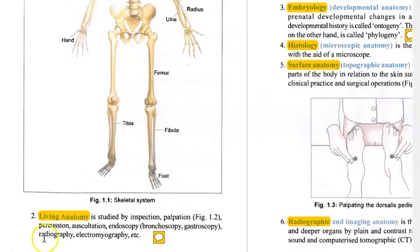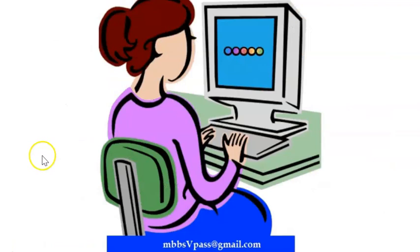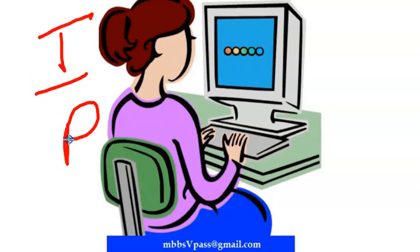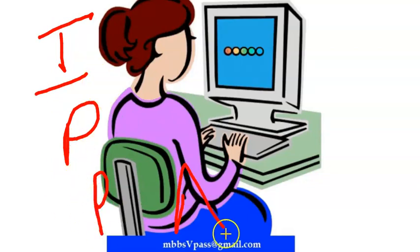Living anatomy — how will you check the anatomy of a living person? You will inspect and palpate. So inspection and palpation are ways of checking your patient.